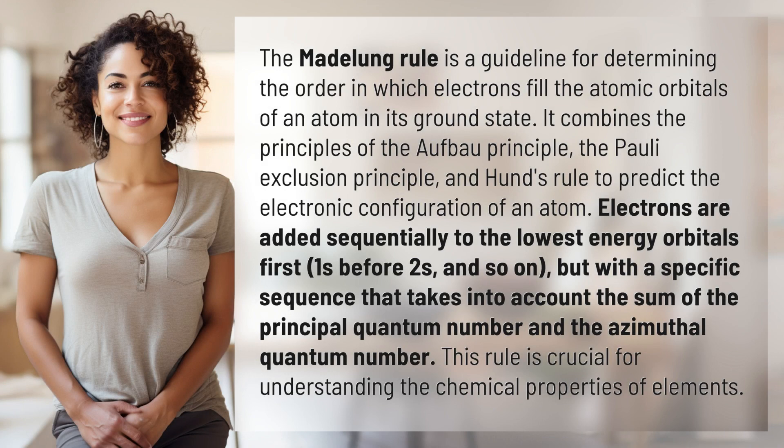The Madelung Rule is a guideline for determining the order in which electrons fill the atomic orbitals of an atom in its ground state. It combines the principles of the Aufbau Principle, the Pauli Exclusion Principle, and Hund's Rule to predict the electronic configuration of an atom.